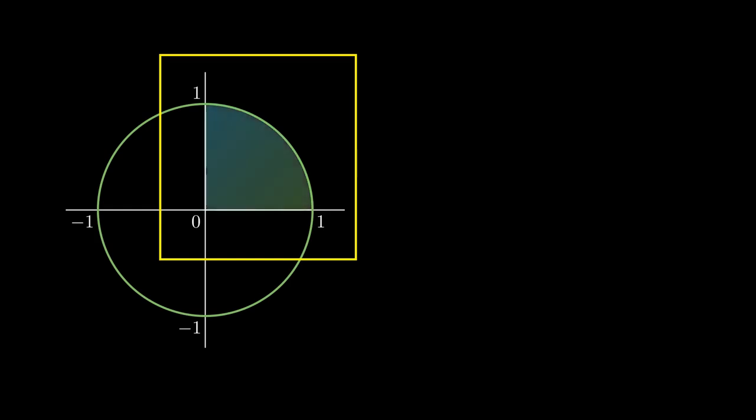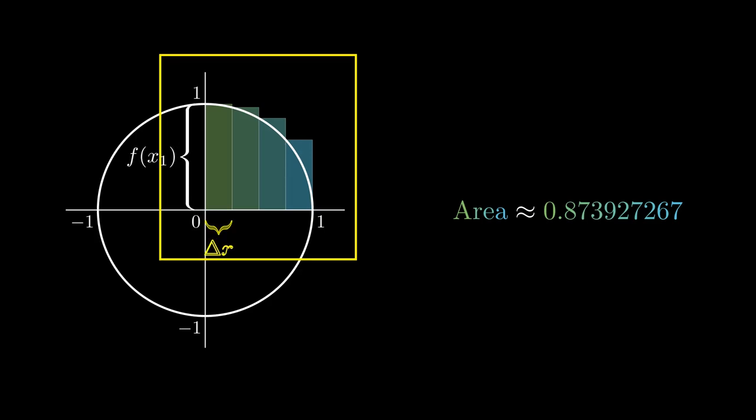Let's approximate this area using a bunch of rectangles. Each of these rectangles is given by a height and a width. And we're trying to add up the total area, which is taking the heights multiplied by the widths and summing them up.